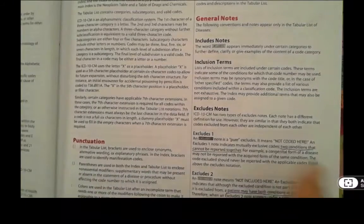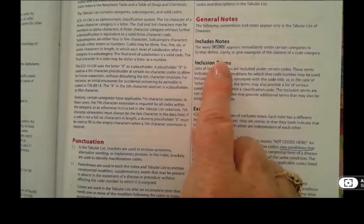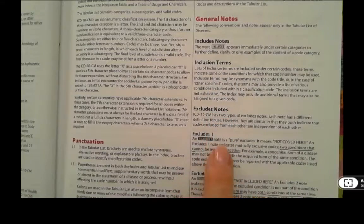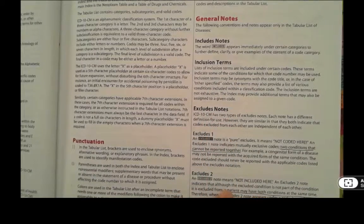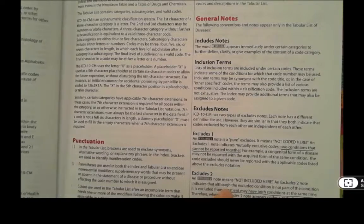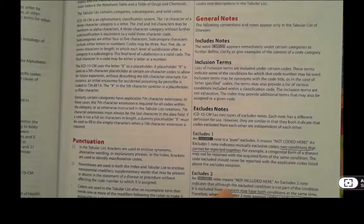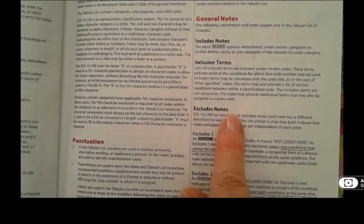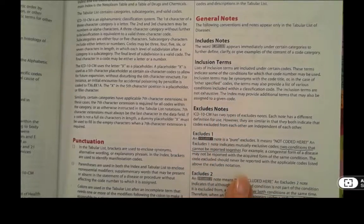Some history of ICD-9 is here. These notes where it talks about inclusion terms, excludes one, and excludes two are really important. Don't just gloss over the punctuation and the instructional notes, because they are like driving a car — if the speed limit changes or there's a caution sign, that's what instructional notes are. They're giving you instructions for how you move forward in finding your code, so do pay attention to those.